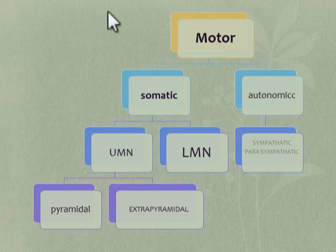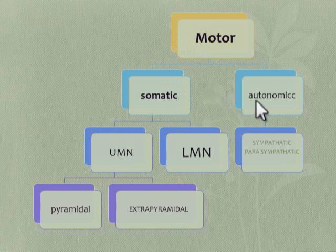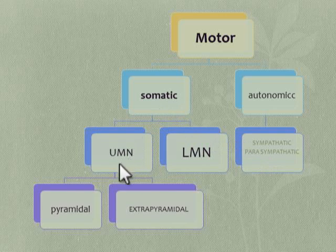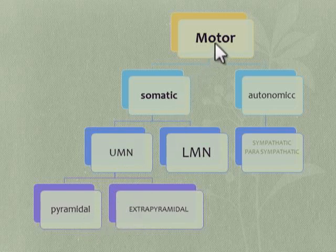The basic classification of motor nerves: first is somatic and autonomic. Autonomic means sympathetic and parasympathetic. Somatic is divided into upper motor neuron and lower motor neuron. Upper motor neuron is also of two types: pyramidal and extra-pyramidal. Motor neurons are basically neurons or nerves that transmit impulses from the brain to the periphery.